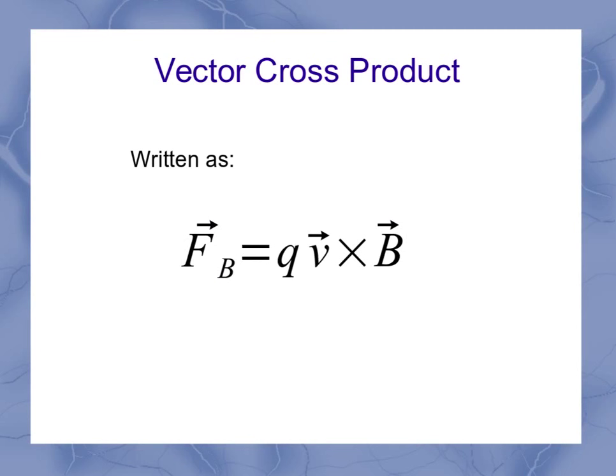If I write out the vector cross product using this vector notation, my force equation is going to look like this, where now my vector force is equal to Q V cross B. And this V cross B is this vector cross product between the velocity and the magnetic field. So the force equals the charge multiplied by the vector cross product between the velocity and the magnetic field.